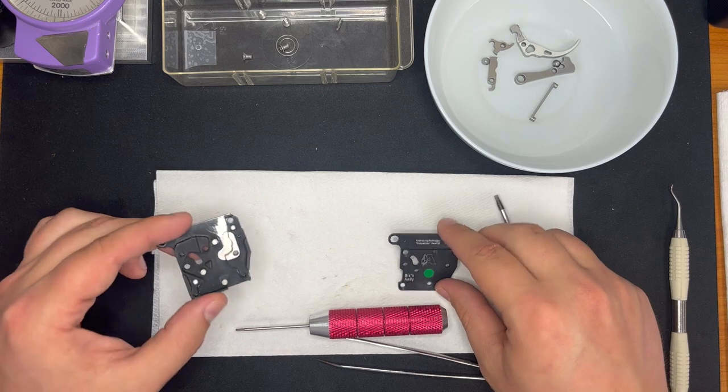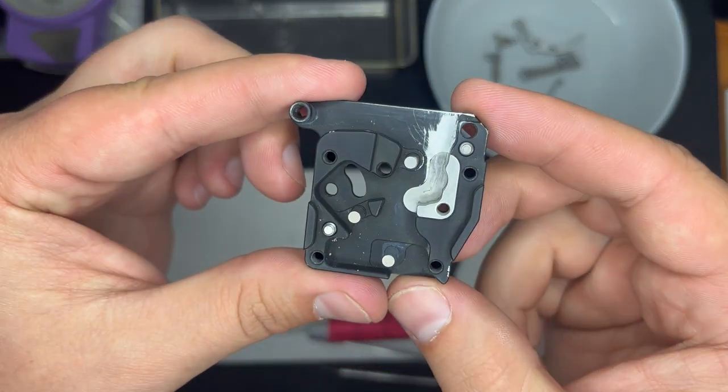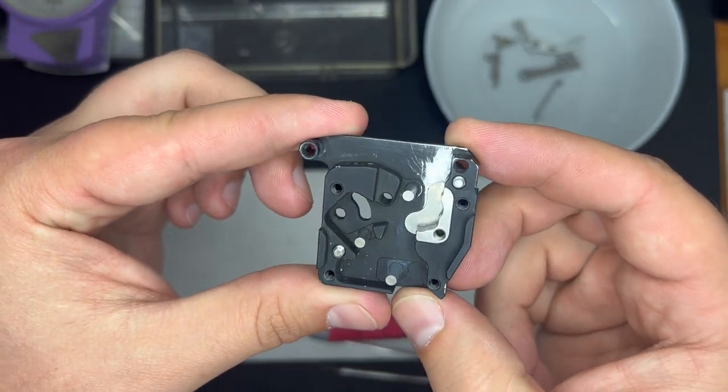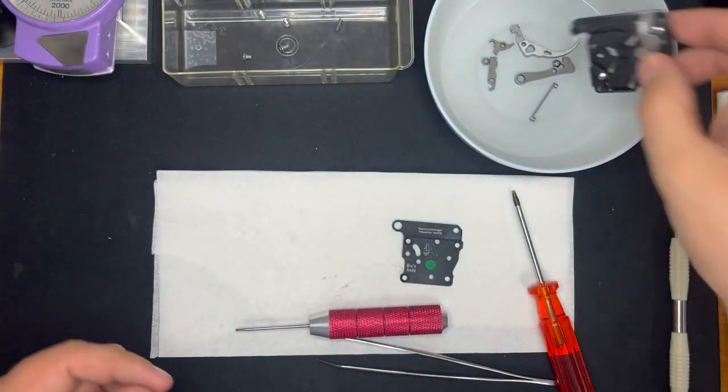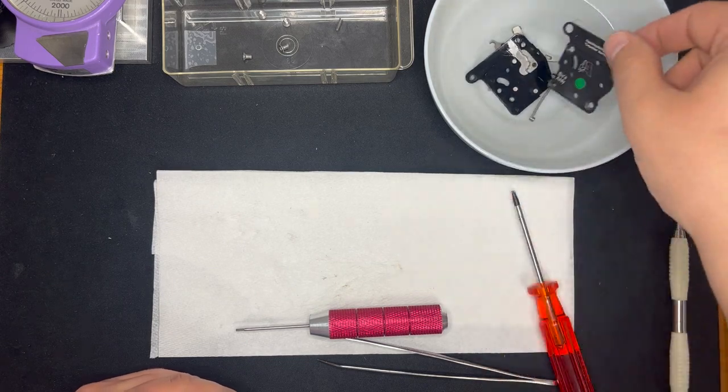We're going to put this in our bowl of alcohol. You don't have to do this. I like to do this. As you guys can tell here, this thing is pretty gummed up, messed up. She's a dirty trigger. So I'm going to put this in the bowl today. Along with that.